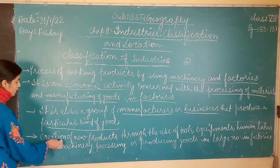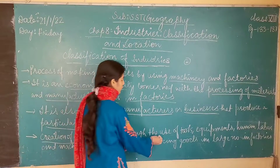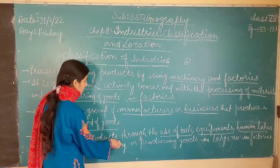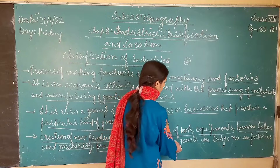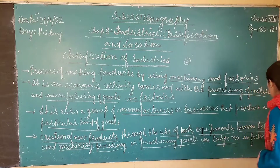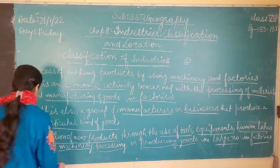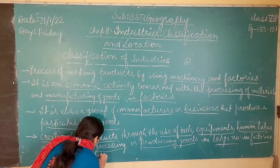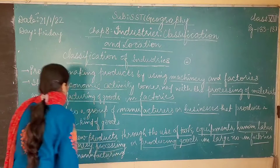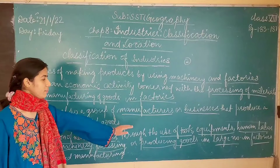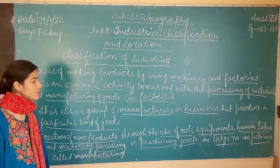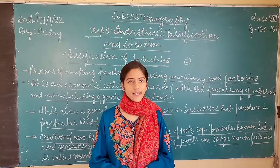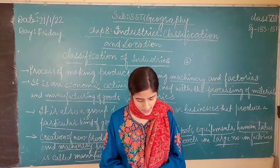So manufacturing is the creation of new products through the use of tools, equipment, human material, and machinery — it is the processing or producing of goods in large numbers in factories. Modern industrial development started with the use of mechanical power. The industrial revolution started with the invention of the steam engine in 1769 in England.